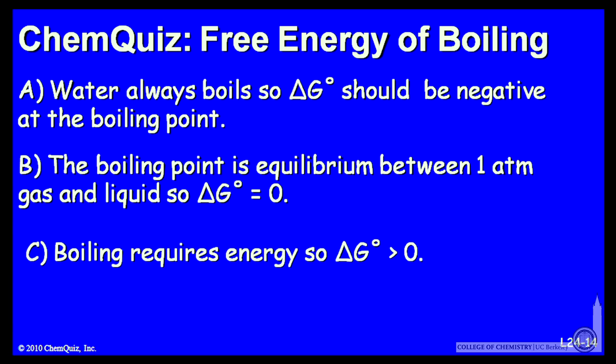Let's look at a possible explanation for each answer. A, water always boils, so delta G should be negative at the boiling point. B, the boiling point is the equilibrium between one atmosphere of gas and liquid, so delta G standard should be 0.